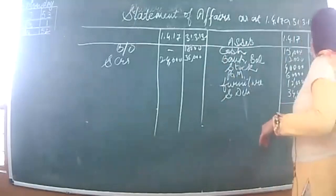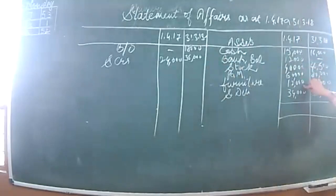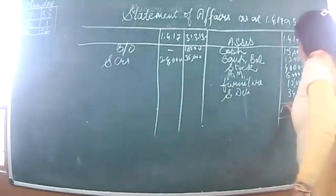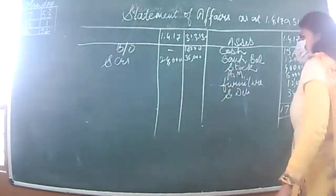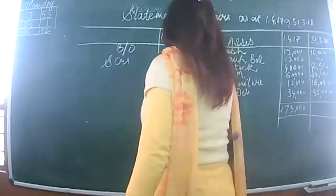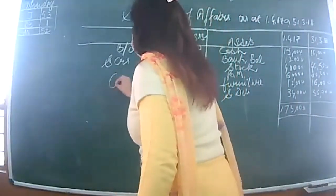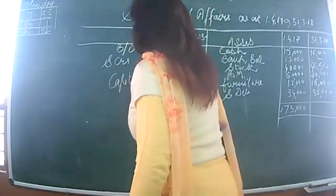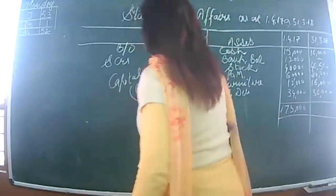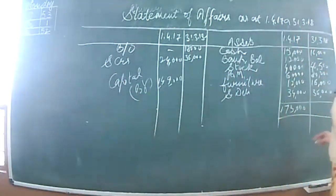Let's calculate the total. Adding up the figures: 15 and 12 gives 27, and the total comes to 1,73,000 on the asset side. After deducting liabilities of 24,000, the opening capital (balancing figure) comes to 1,49,000. So our opening capital is 1,49,000.